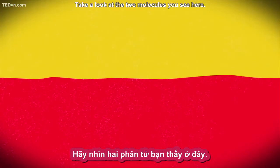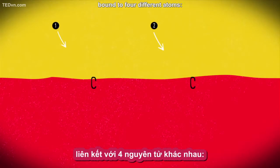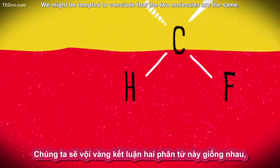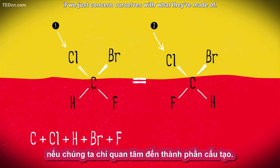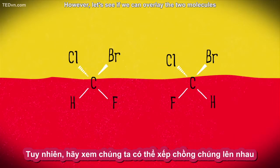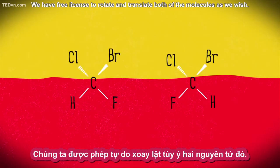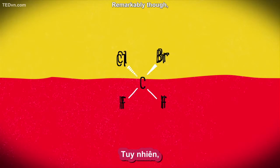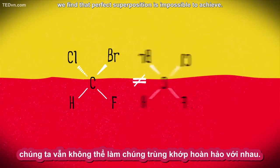Take a look at the two molecules you see here. Each one is characterized by a central tetrahedral carbon atom bound to four different atoms: bromine, chlorine, fluorine, and hydrogen. We might be tempted to conclude that the two molecules are the same if we just concern ourselves with what they're made of. However, let's see if we can overlay the two molecules perfectly to really prove that they're the same. We have free license to rotate and translate both molecules as we wish. Remarkably, though, no matter how we move the molecules, we find that perfect superposition is impossible to achieve.